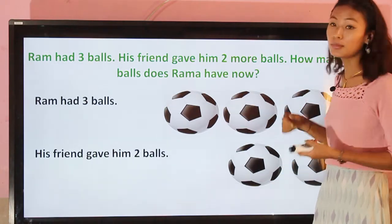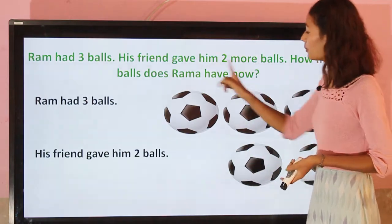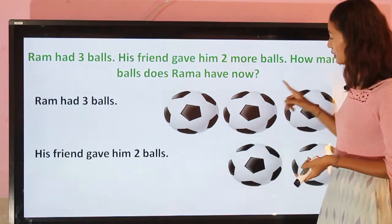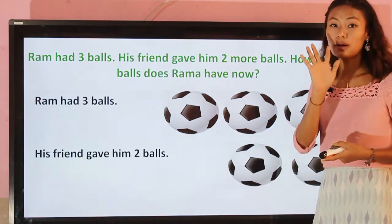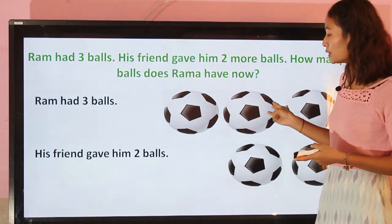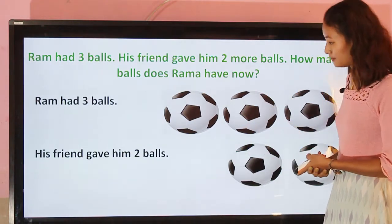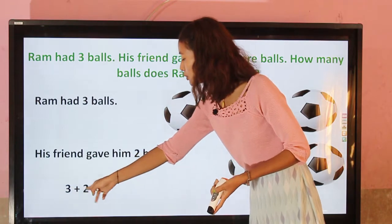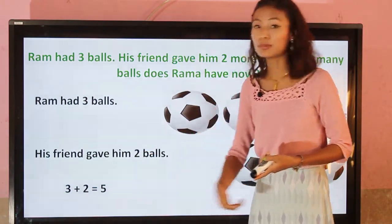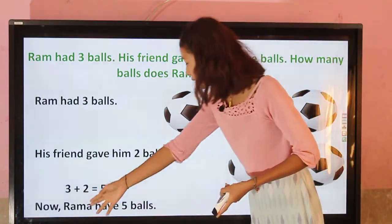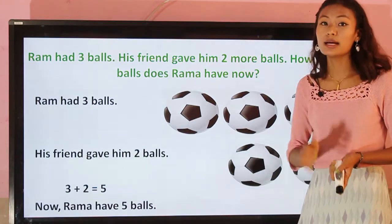First, Ram had three birds. Then his friend gave him two more. Let's count them all: one, two, three, four, five. So in total, Ram now has five birds. Three plus two is five. Ram has five balls in total.